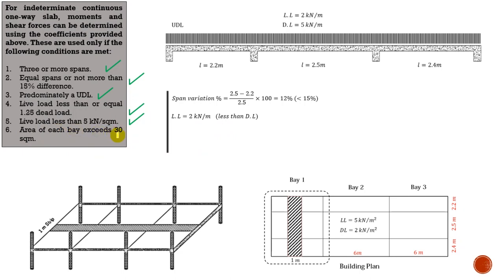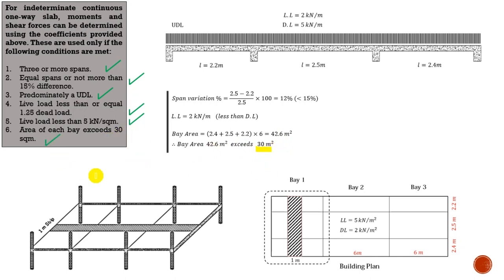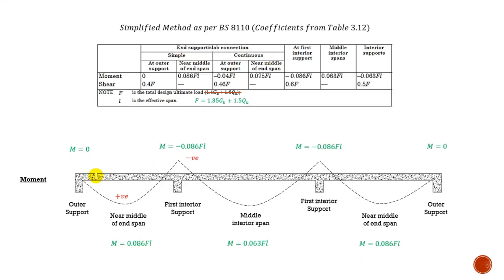The third condition says you have to have a predominantly UDL — we don't have any point load, we only have a UDL, that's another tick. Live load less than dead load — our live load is less than the dead load, tick. Live load is also less than 5 kN/m², tick. The last condition says the area of each bay must exceed 30 m² — that's 2.4 plus 2.5 plus 2.2, all multiplied by 6, giving an area of 42.6 m², which is more than 30. All conditions are met, so I'm eligible to use this simplified method.